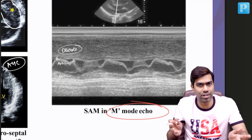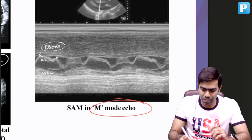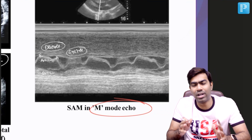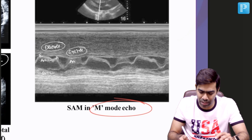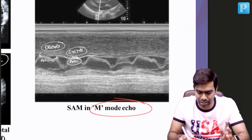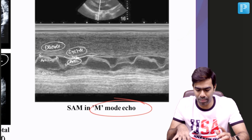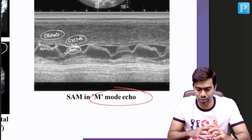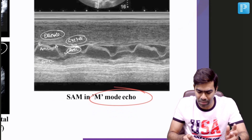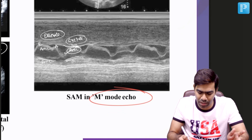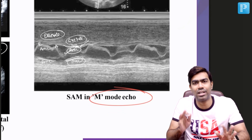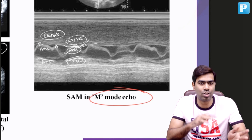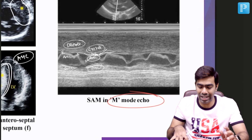This is the E-wave and this is the A-wave, as discussed in previous sections. But when it comes to systole, movement of the mitral valve leaflet should not be present technically. However, here you can see the AML still moves a lot — in fact, it touches the interventricular septum. This is a significant systolic anterior motion of the anterior mitral leaflet, typically seen in HCM. Even though the PML does not move much in diastole, there is also some significant PML movement along with the AML in HCM patients. The AML movement during systole is very classic — this is what we call SAM of AML, demonstrated in M-mode echo.